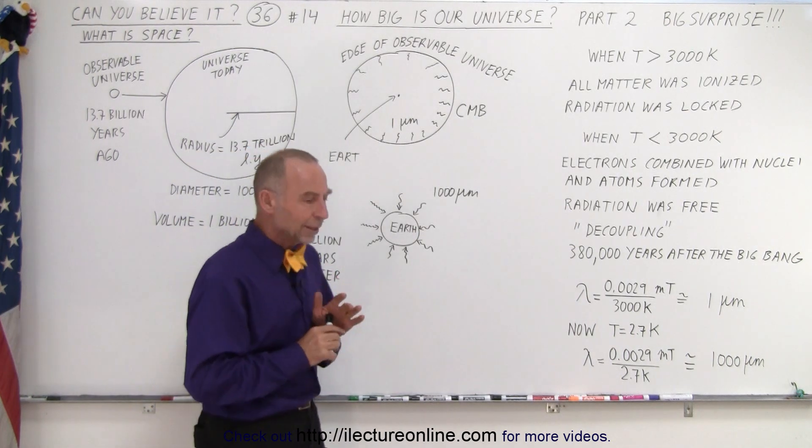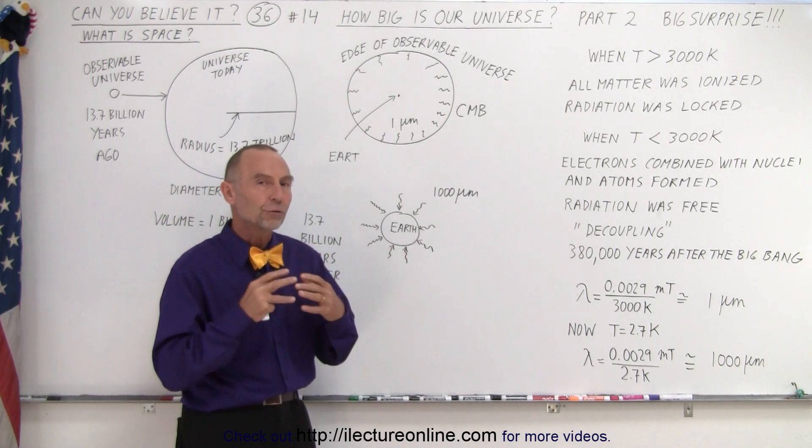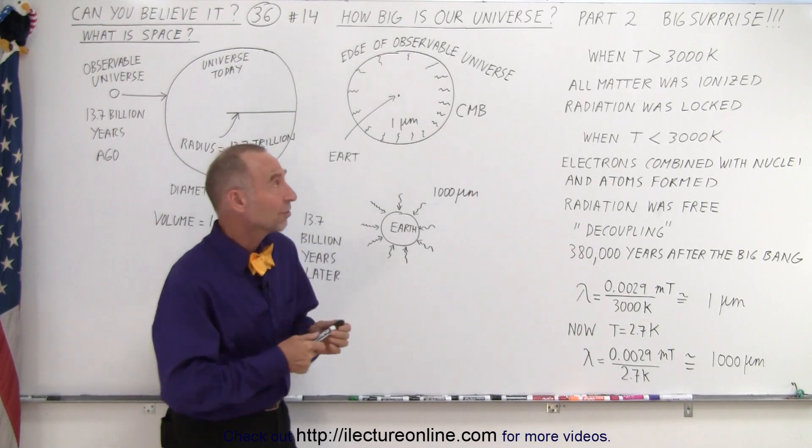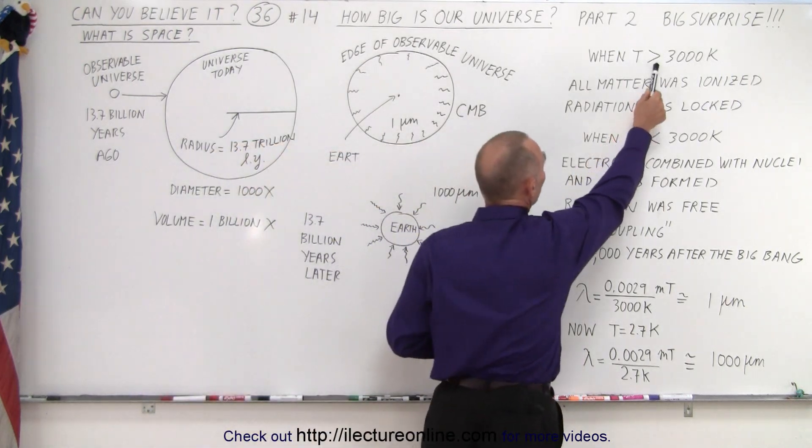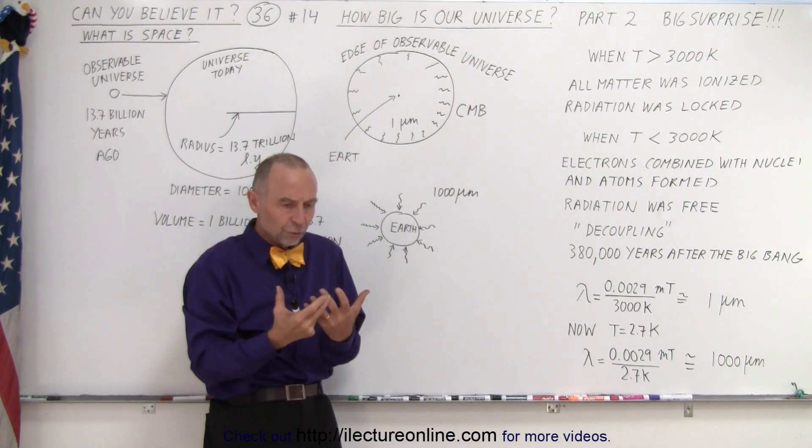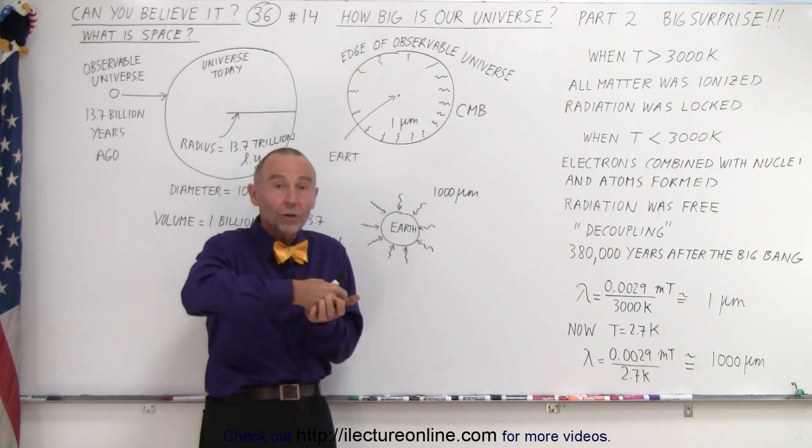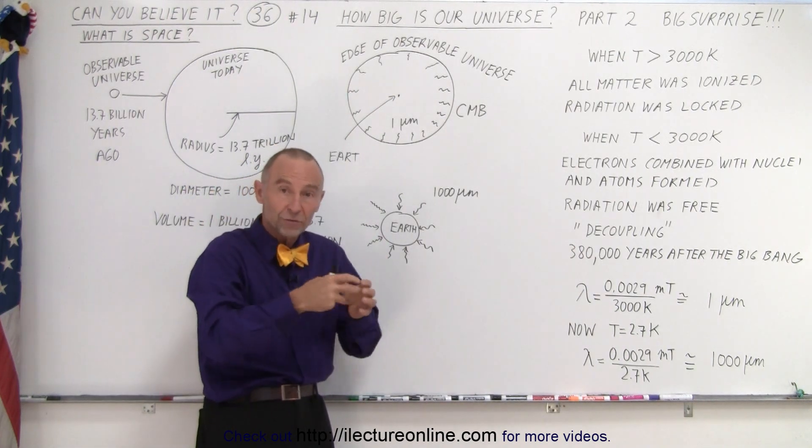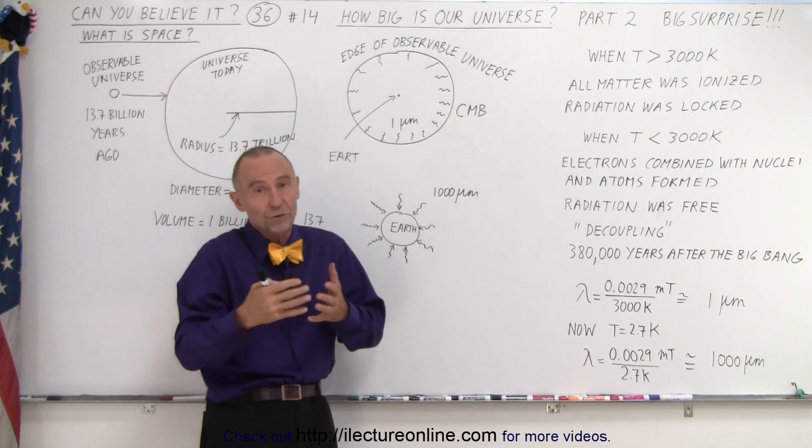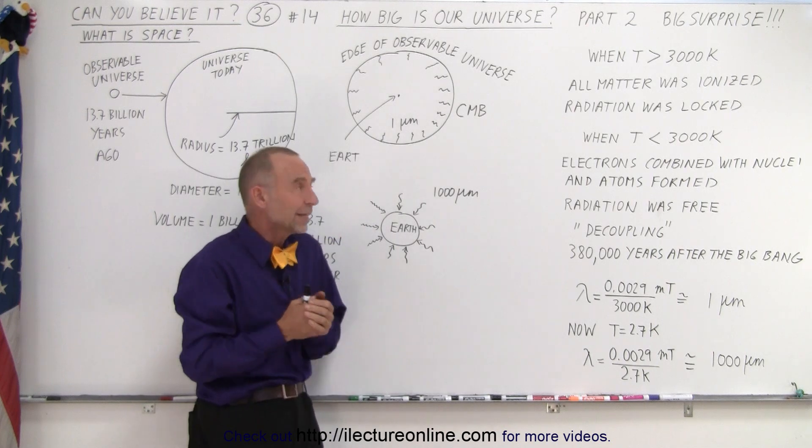We all do realize that there was a time that the universe was smaller than it is today and the universe was a lot hotter than it was today. And there was a time that the temperature of the universe was greater than 3000 Kelvin. So the universe was kind of like being inside a star. It was so hot that all the electrons had been stripped away from the protons for hydrogen and the nuclei of helium because at that time the universe was primarily 75 percent hydrogen and 25 percent helium.